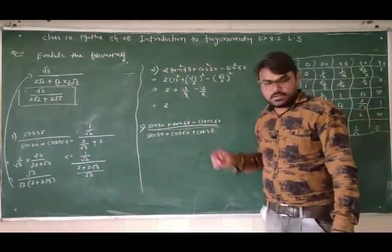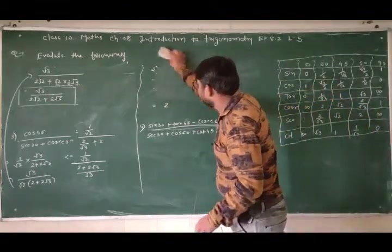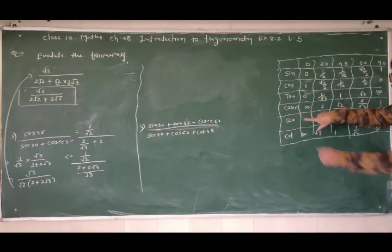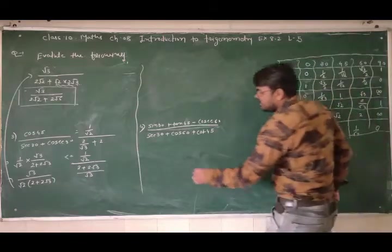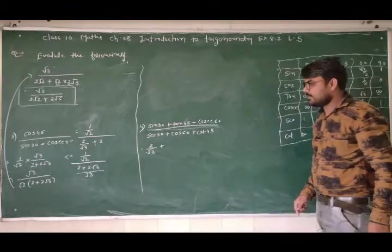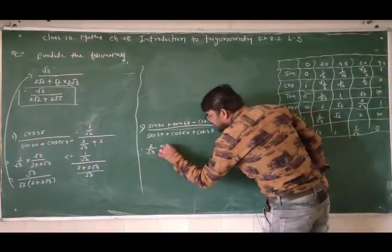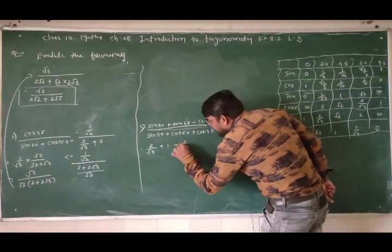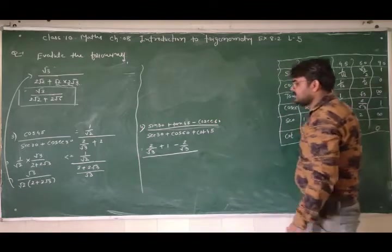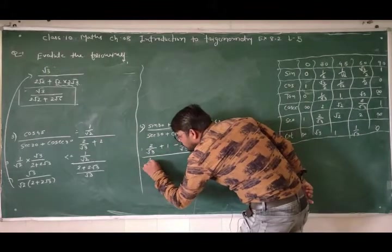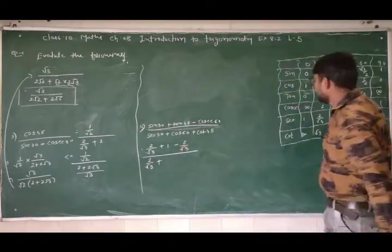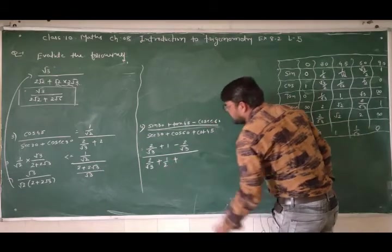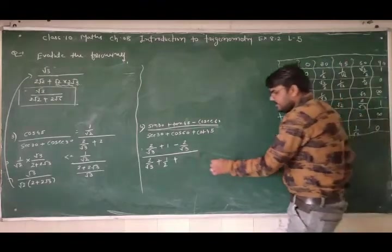चलिए: sec30 की value = 2/√3. Plus tan45 = 1. Minus cosec60 = 2/√3. Divided by: sec30 = 2/√3 + cos60 = 1/2 + cot45 = 1. Wait — sin30 = 1/2 (not 2/√3 — sorry), and cosec60 = 2/√3. sec30 = 2/√3, cos60 = 1/2, cot45 = 1. सबकी values रख दी — बस LCM लेकर solve करना है।